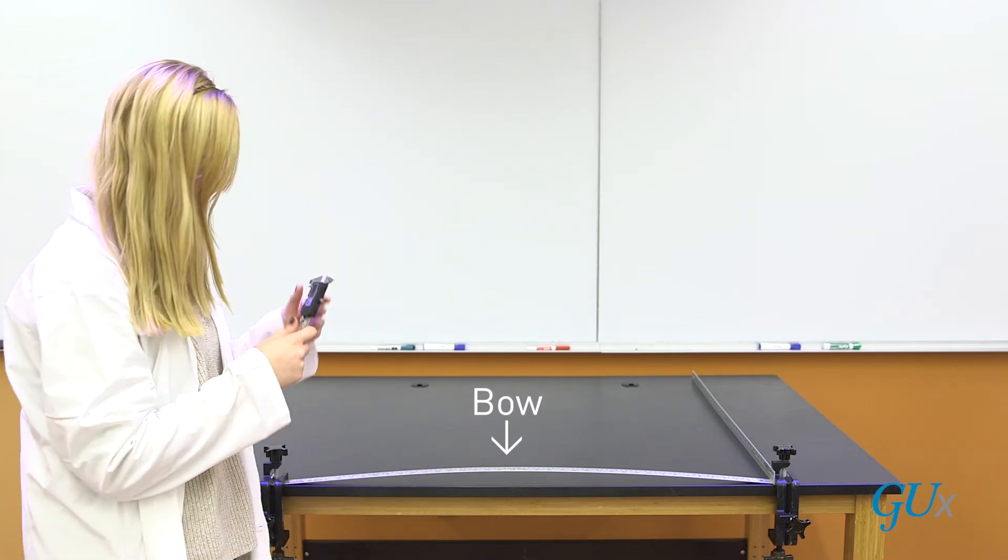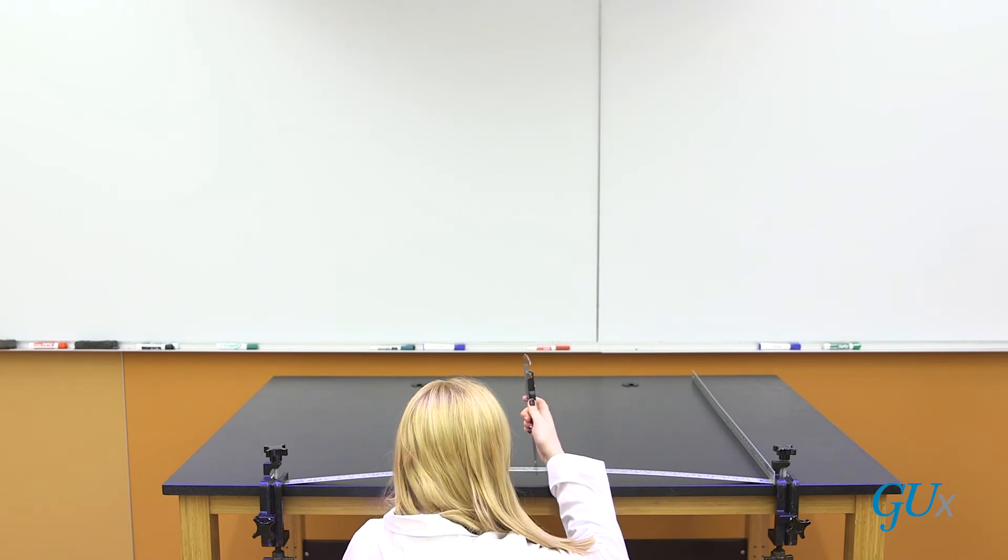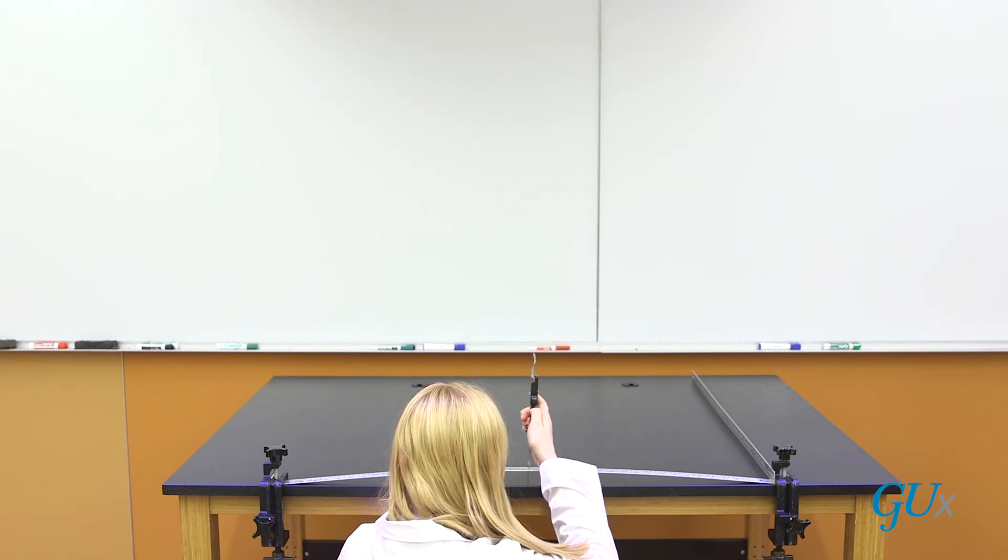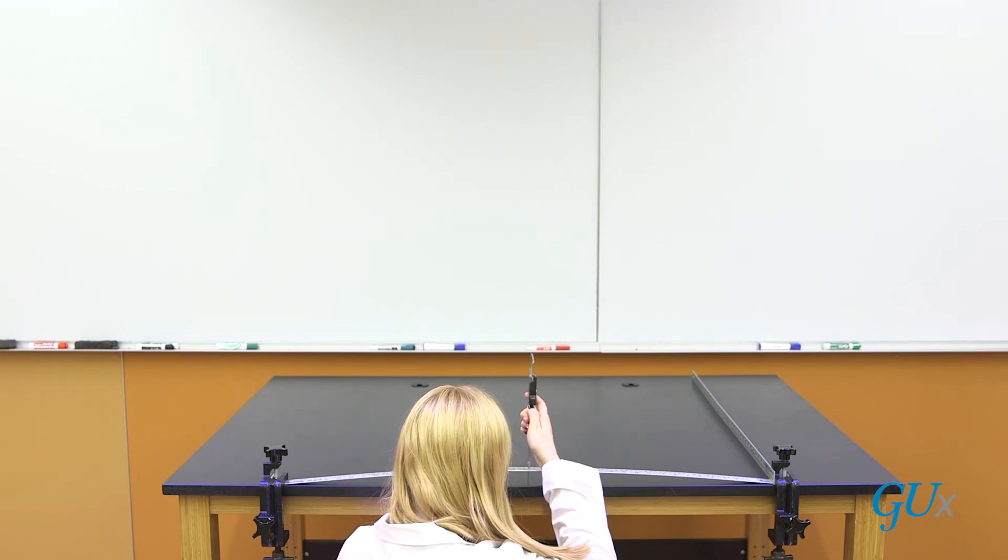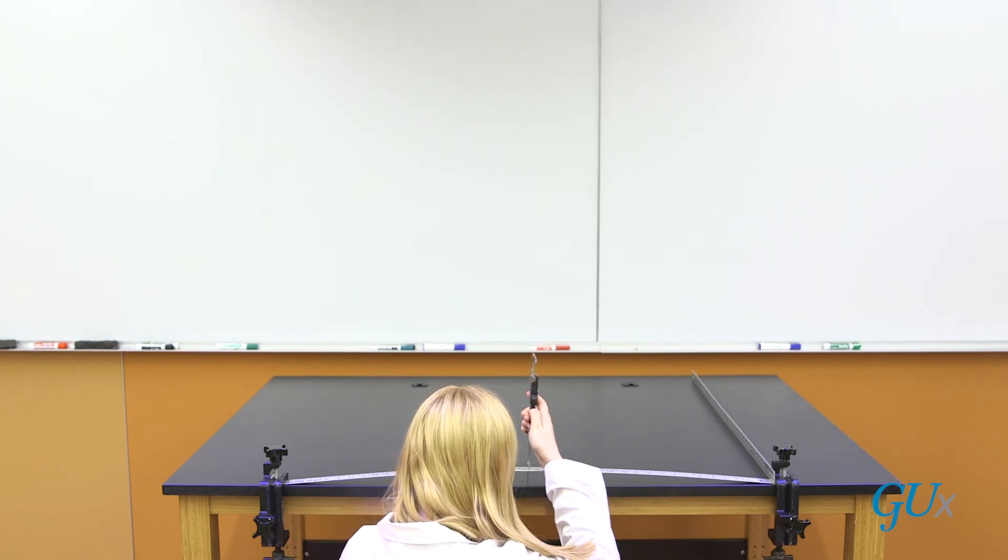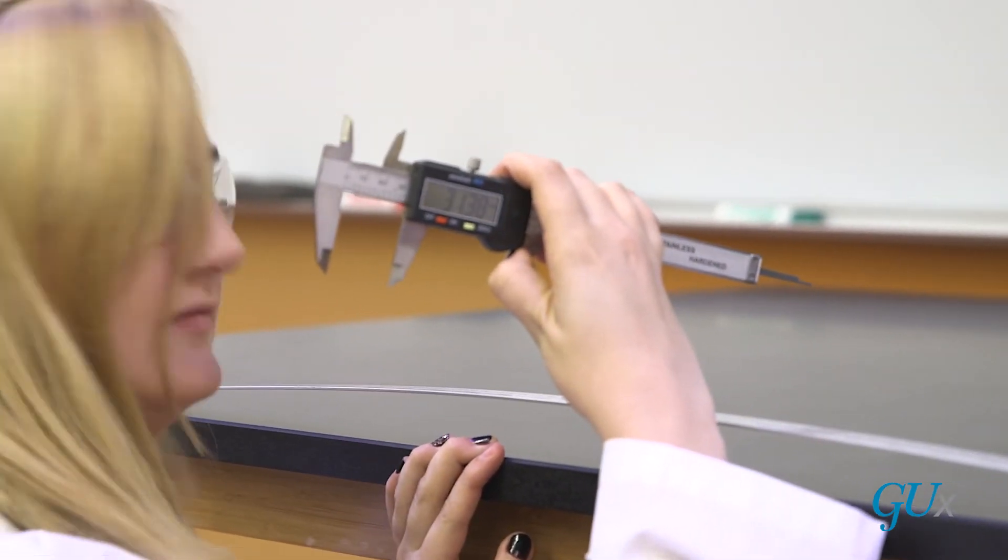We're going to use the depth gauge facility of this caliper to measure that height of how big the bow is, and we're going to do that very carefully. It takes just a little time to get it set up and you find after it gets set up that it is right around 31 millimeters.